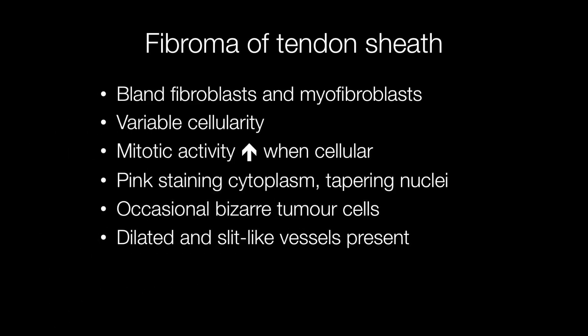Histologically, fibromas of tendon sheath are composed of bland fibroblasts and myofibroblasts. The cellularity is variable. If they are cellular, then there is an accompanying increase in mitotic activity. The cells show pink staining cytoplasm and tapering nuclei, and occasionally bizarre tumour cells may be seen. Another useful diagnostic feature is the presence of dilated and slit-like blood vessels.